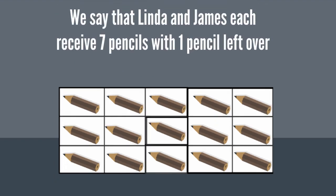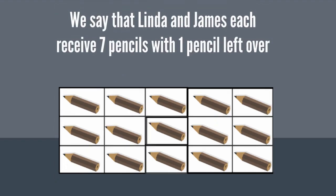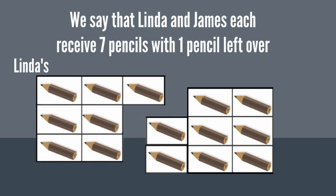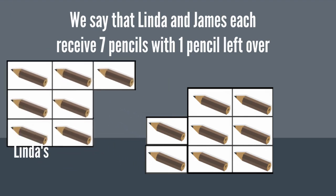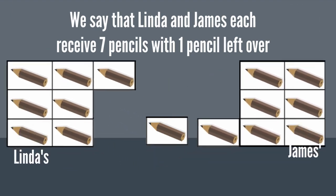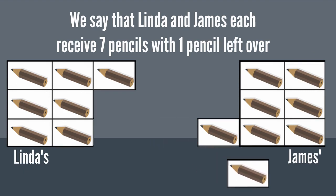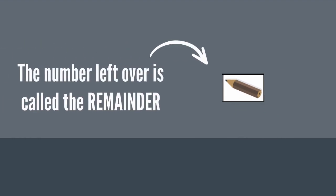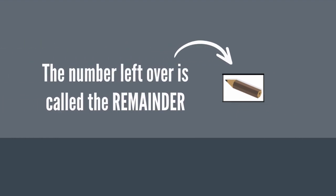We say that Linda and James each receive 7 pencils, with 1 pencil left over. The number left over is called the remainder.